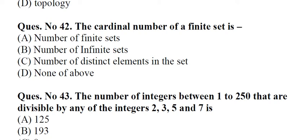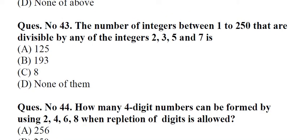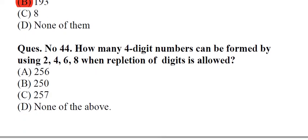Question number 42: The cardinal number of a finite set is dash. A. Number of finite sets, B. Number of infinite sets, C. Number of distinct elements in the set, D. None of above. Answer: C, Number of distinct elements in the set. Question number 43: The number of integers between 1 to 250 that are divisible by any of the integers 2, 3, 5 and 7 is A. 125, B. 193, C. 8, D. None of them. Answer: B, 193.